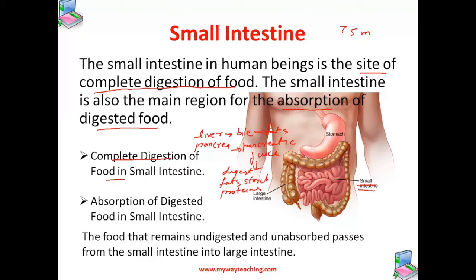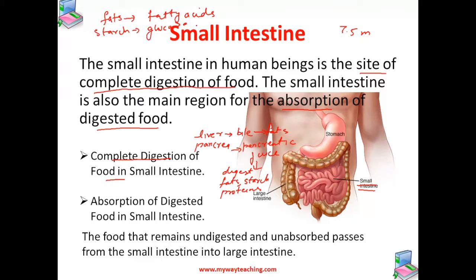After digestion, fats are converted to simpler molecules called fatty acids. Starch is converted to glucose, and proteins are converted to amino acids.